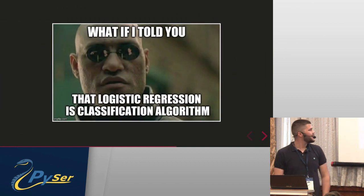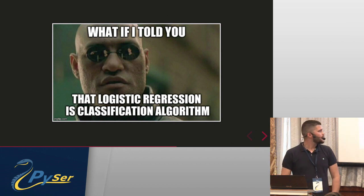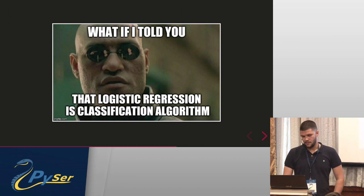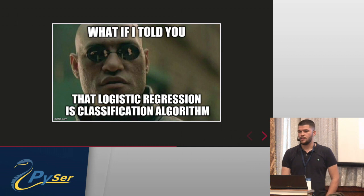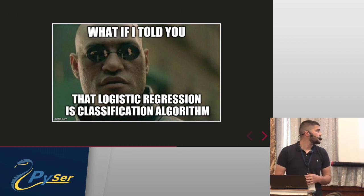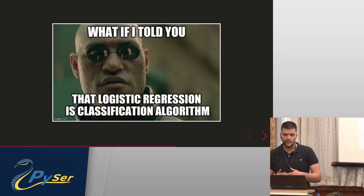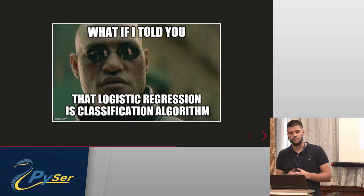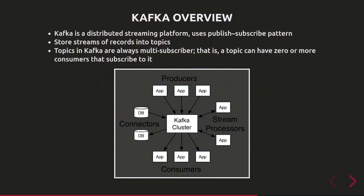I created a meme to explain the difference between linear and logistic regression. Linear regression is the first algorithm everyone starts with in data science — it solves regression problems. Logistic regression solves classification problems. In regression we predict a continuous variable like price based on features of a data point. In classification, like with logistic regression, we predict the category — for example, whether an email is spam or not.